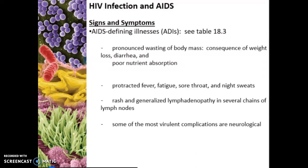When a person moves to the point of being classified as having AIDS, they are going to have AIDS-defining illnesses, or ADIs. This signifies pronounced wasting of body mass due to overall weight loss, as the person's overall health is deteriorating. There is diarrhea because the GI tract is being affected, resulting in poor nutrient absorption. There can also be fever, fatigue, sore throat, and night sweats. Sometimes there can be a generalized full-body rash, and lymph nodes throughout the body will be swollen — in chains of lymph nodes, not just individual ones.